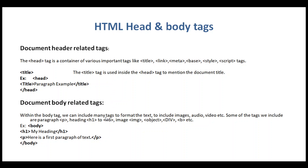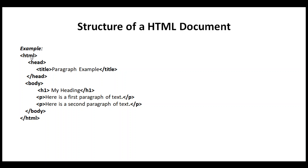The head section and body section have differences. The head section contains document information and metadata, while the body section contains the visible page content. In this example, the head section has only a title, and the body section has one heading and two paragraphs.